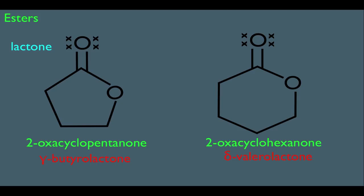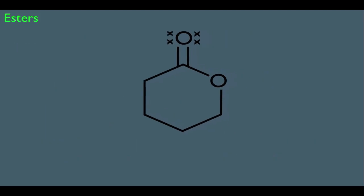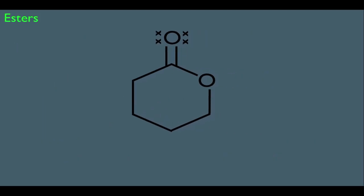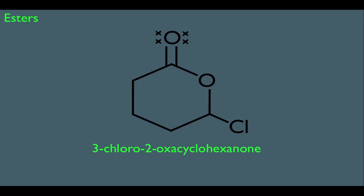Let's look at another example — what if our lactone is substituted? For instance, let's place a Cl here. In a lactone, the oxygen is considered the second position, numbered 2, which means the next carbon would be numbered 3. So the name of this molecule is simply 3-chloro-2-oxacyclohexanone. That is how we name esters and esters within rings.